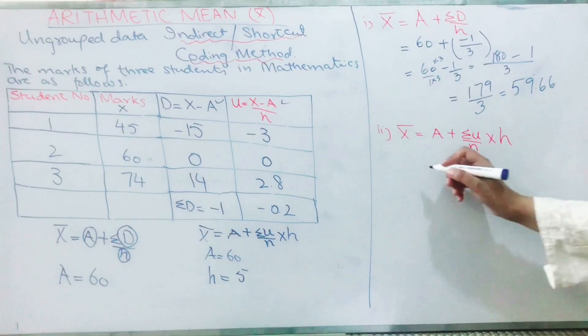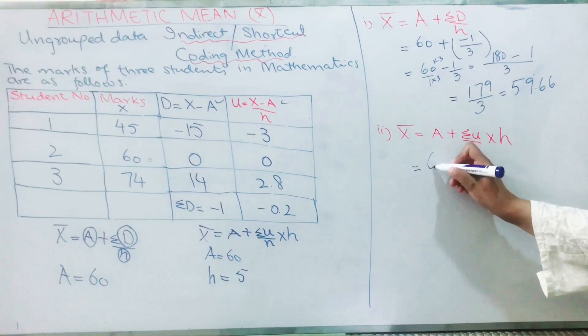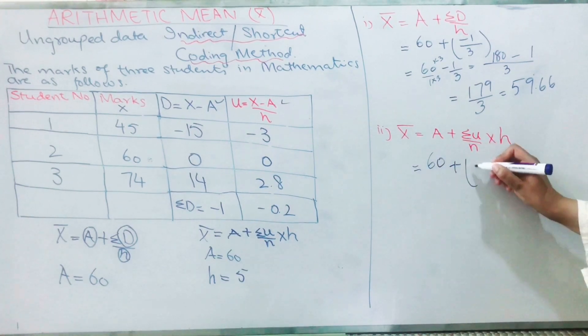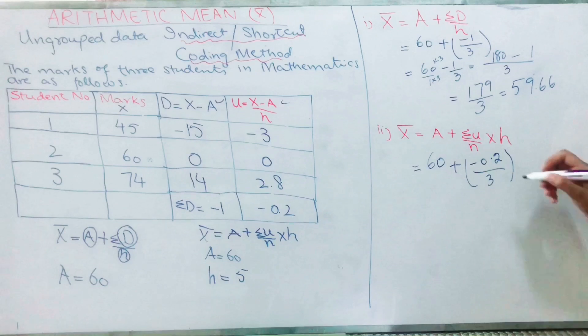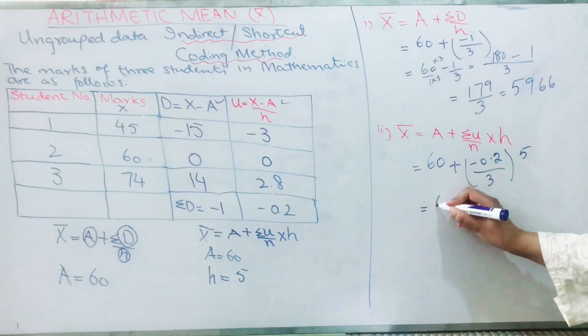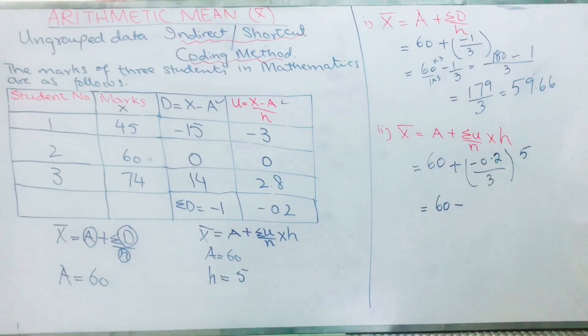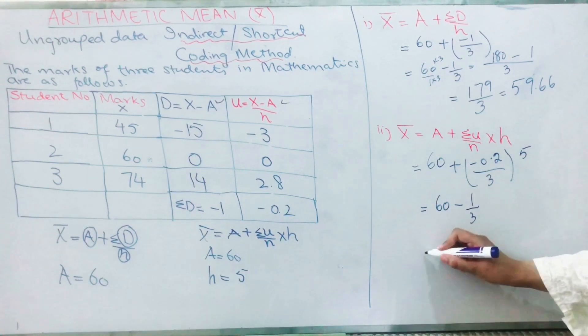Let's substitute the values in the formula. What is A? A equals 60. Σu is minus 0.2, n is 3, and what is my h? It is 5.